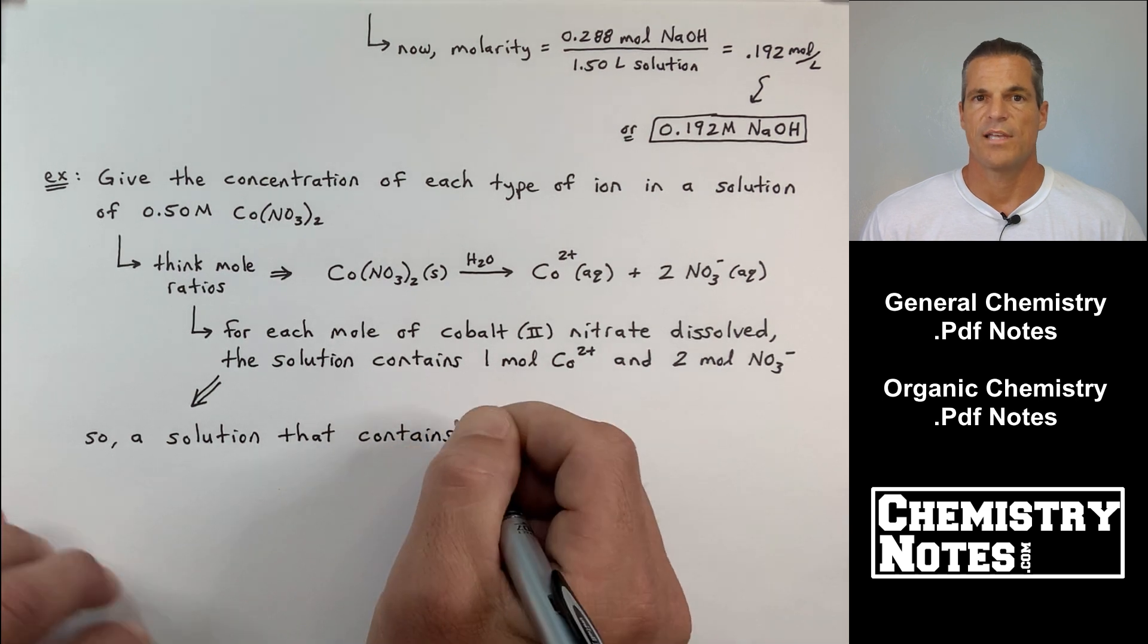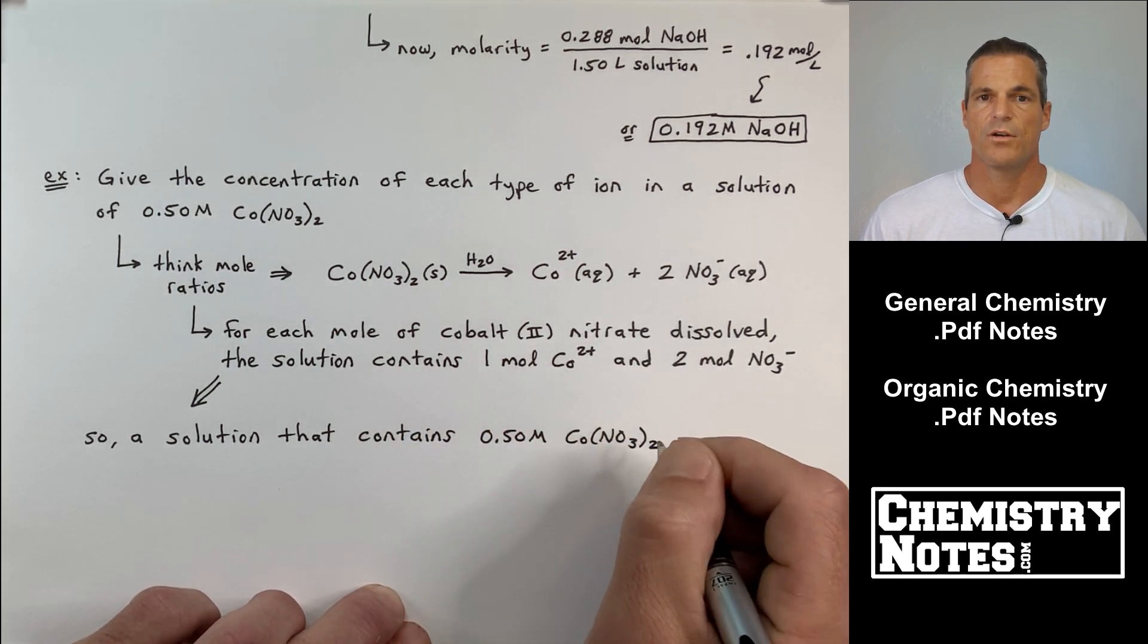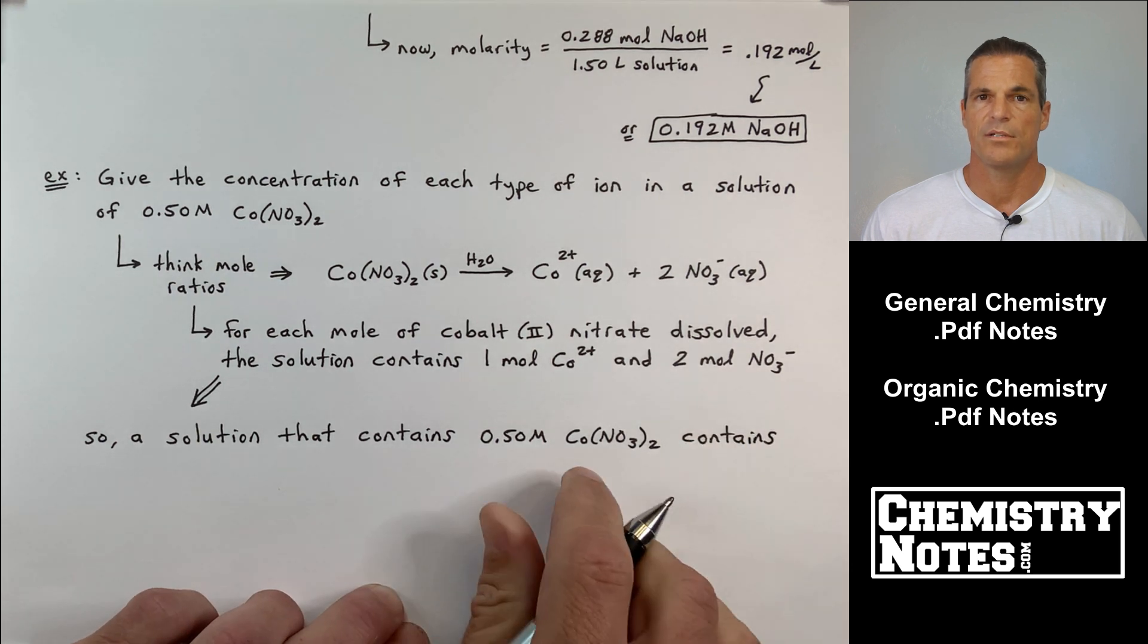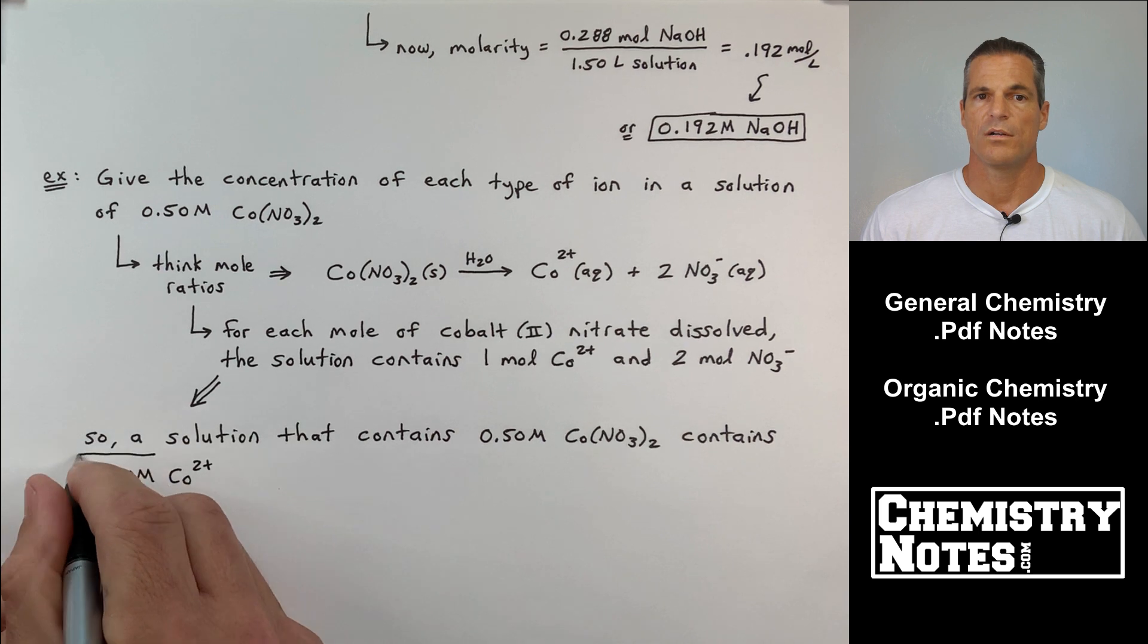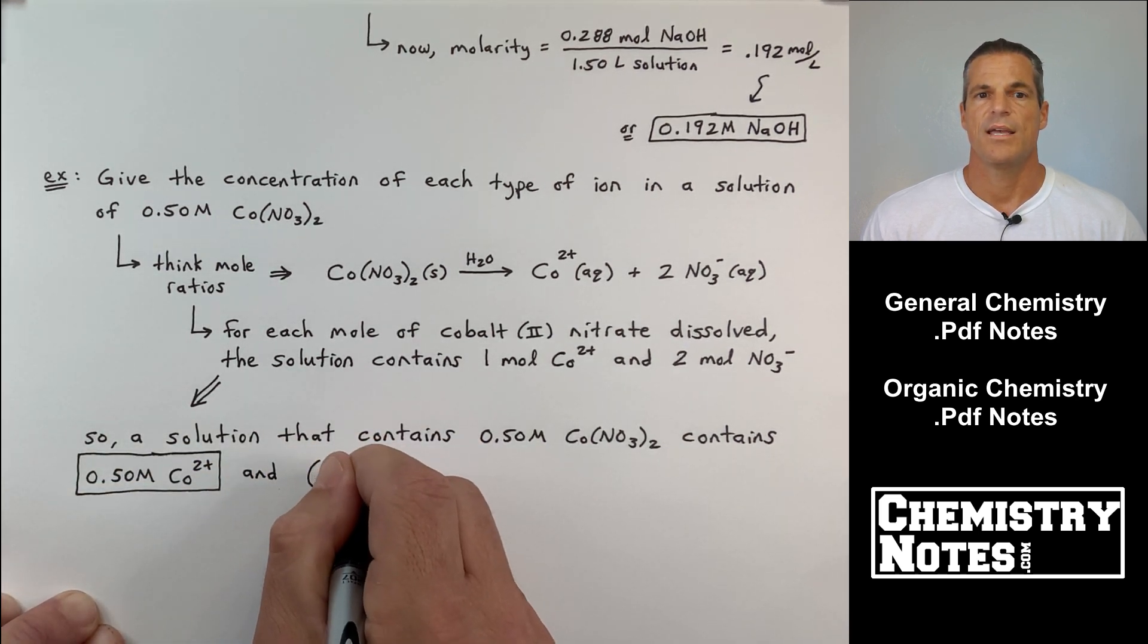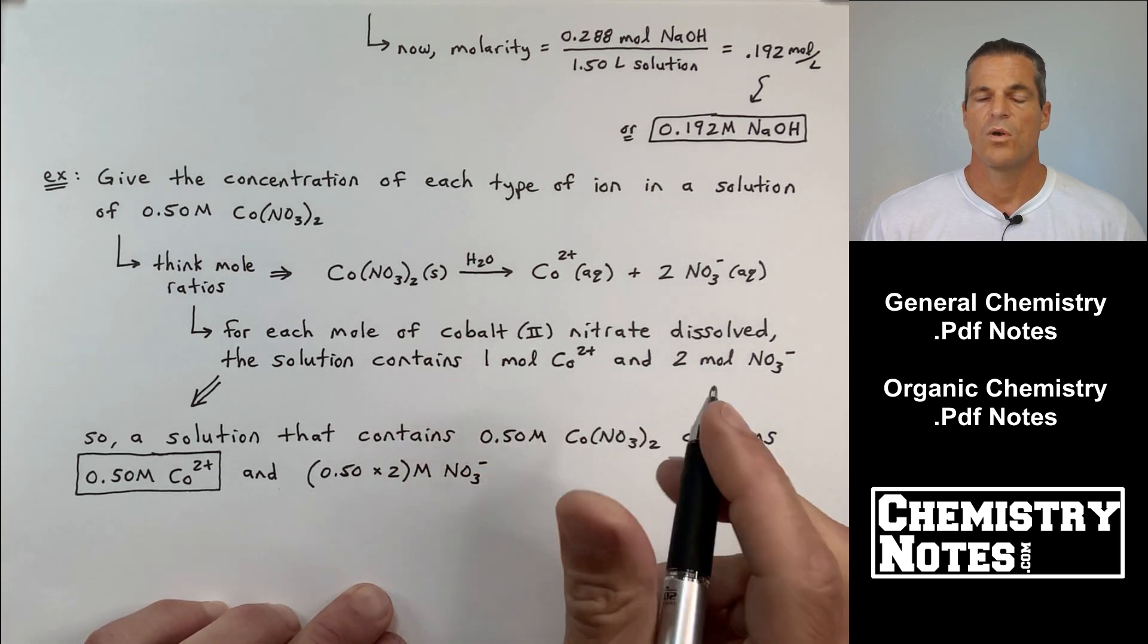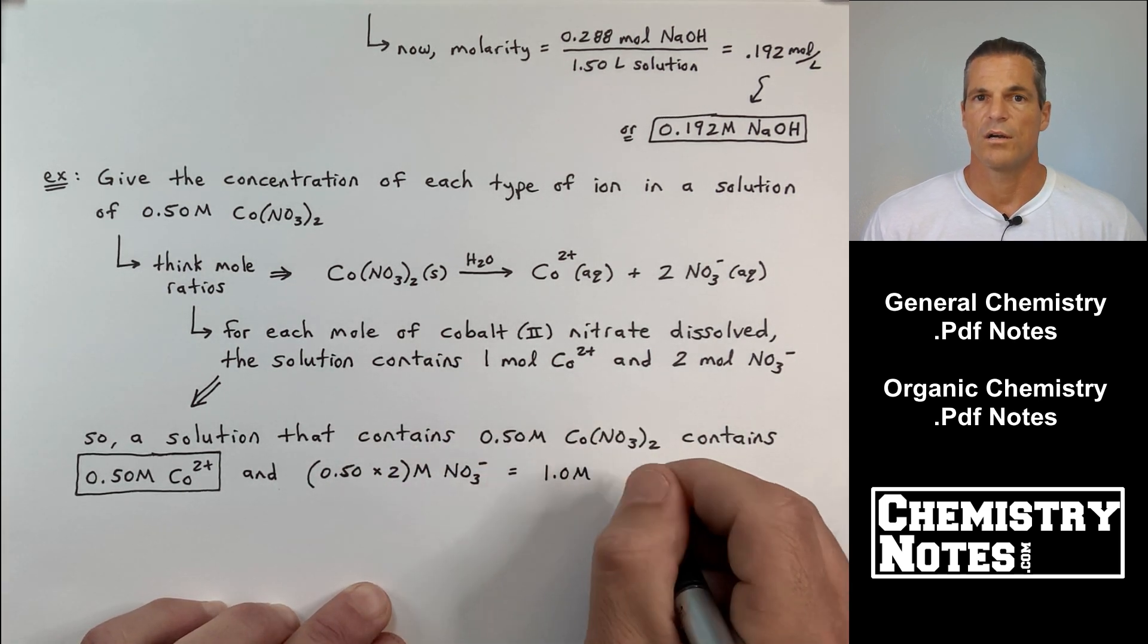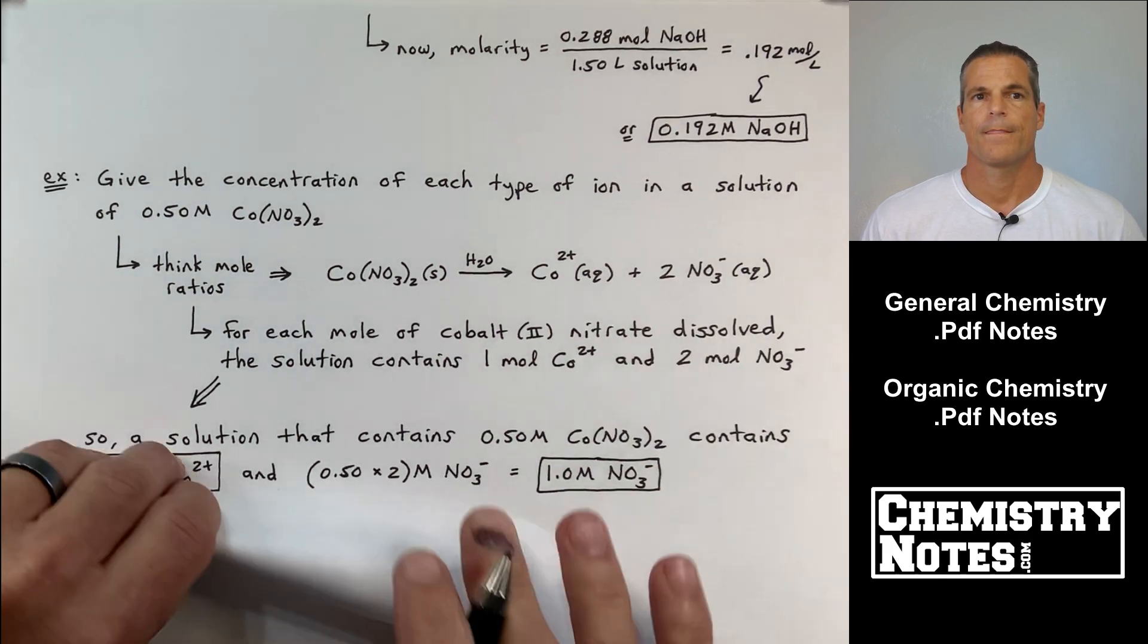So, what can we say then? A solution that contains 0.50 molar Co(NO3)2 contains 0.50 molar Co2+ ions, and 0.50 times 2, in other words, 1.0 molar of NO3- ions.